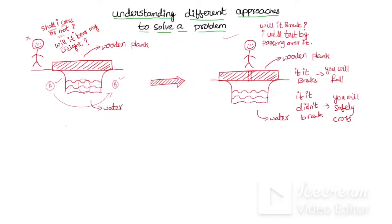The first approach: the person decides to test the wooden plank by simply walking over it. There are two possible outcomes — either the plank breaks and he falls into the water and drowns, or it doesn't break and he safely crosses from point A to point B.